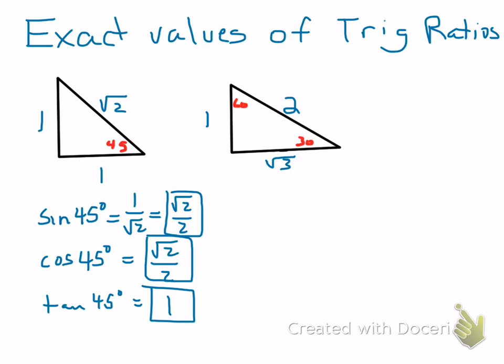Now we can do the sine of 30 degrees. It's just the opposite side over the hypotenuse, that's 1 over 2. The cosine of 30 degrees is the adjacent leg over the hypotenuse.